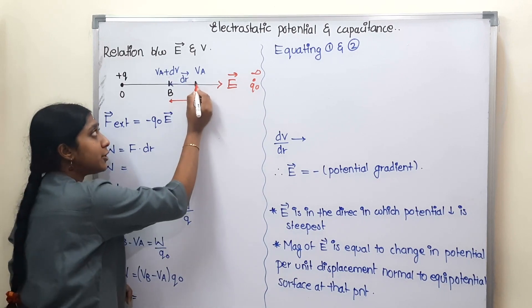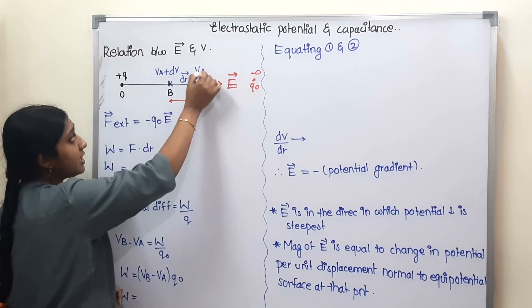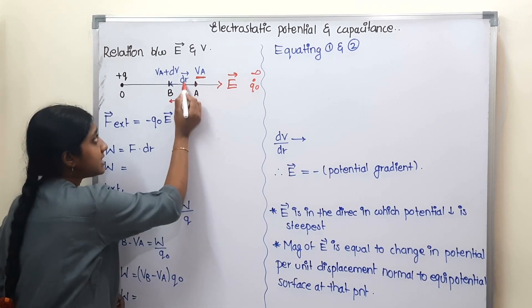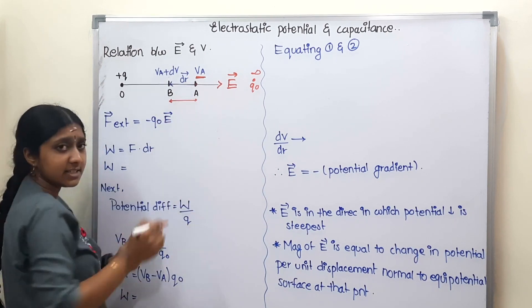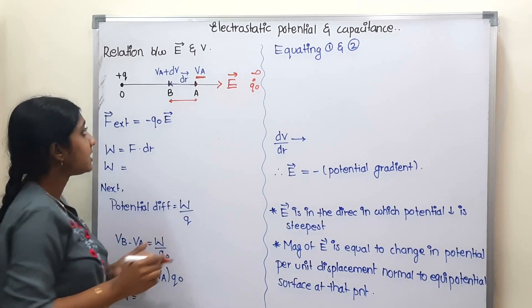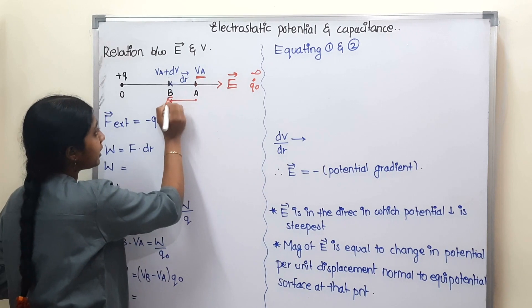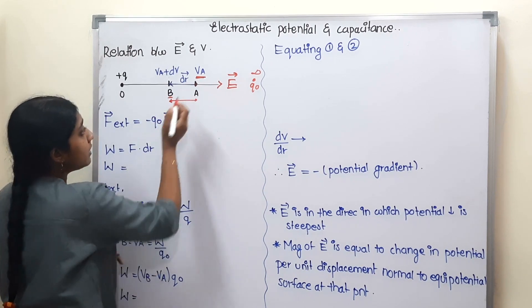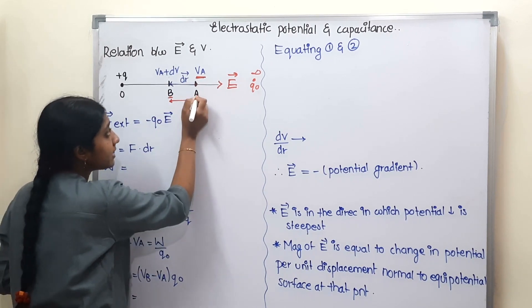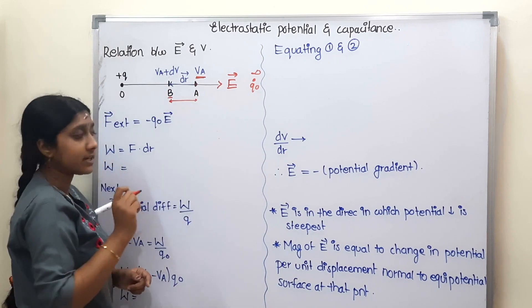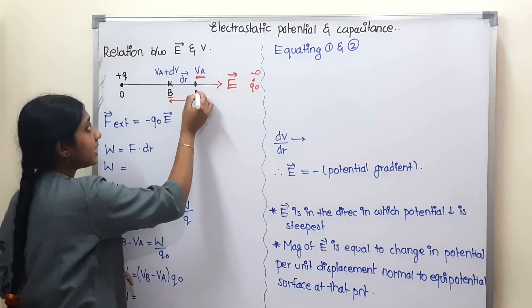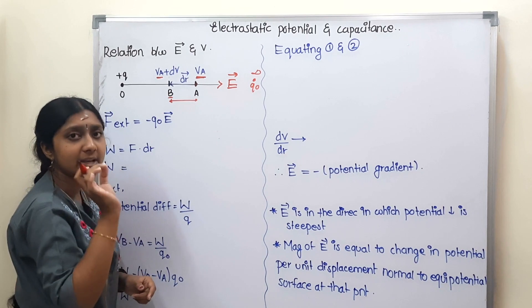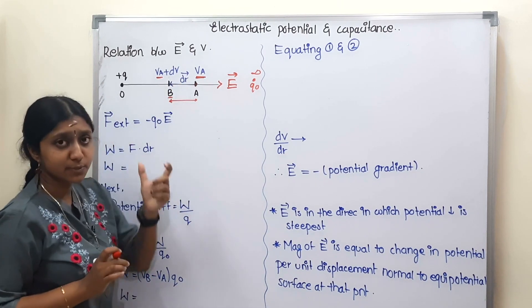Let's consider a point A. That point has a potential Va. There is a small distance dr from that point. We move a small distance dr. Where is the next potential? There is a little extra potential at that displaced point. What is the distance? dV — if we change the distance, we change the potential.